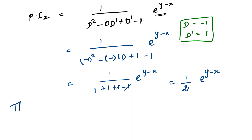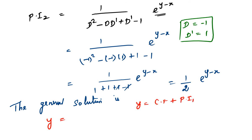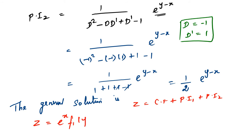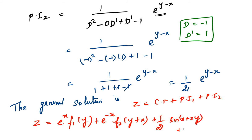The general solution is z equals CF plus PI1 plus PI2, giving e power x f1 of y plus e power minus x f2 of y plus x plus sin x plus 2y over 2 plus 1 over 2 times e power y minus x.